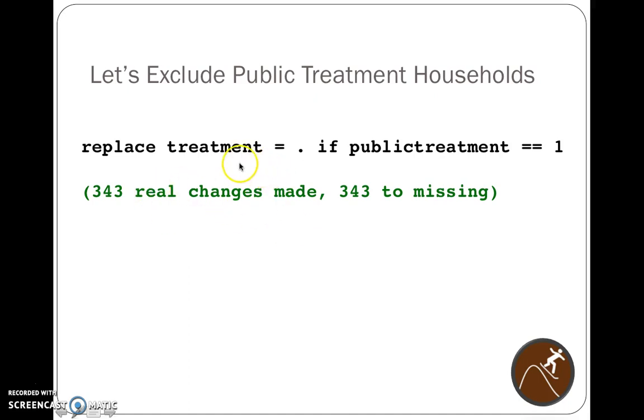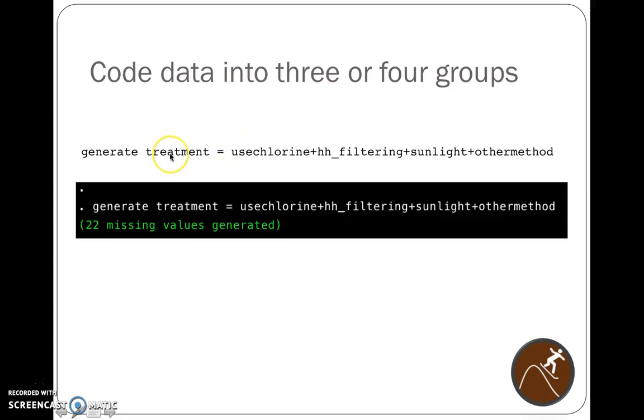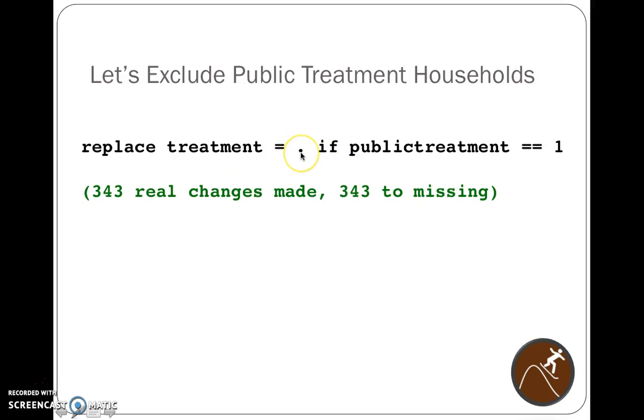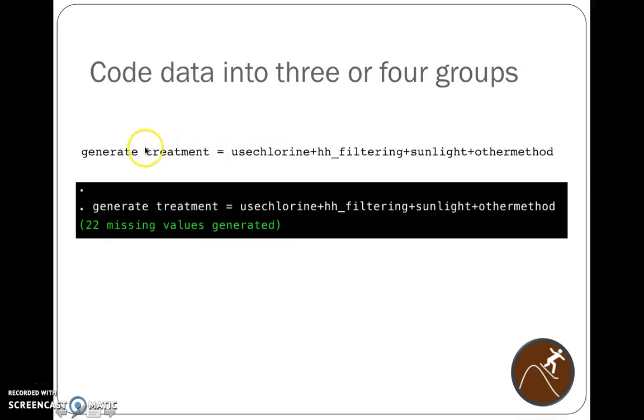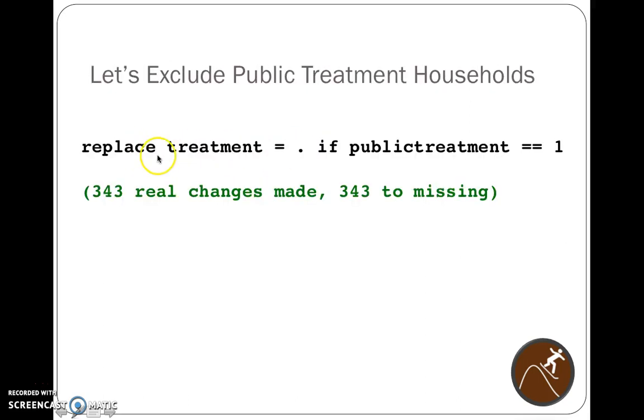Now, we also had people who had publicly treated water, and we weren't really interested in what treatment methods people with publicly treated water did. We assumed that their water was already better. So we said that if they have publicly treated water, we want them to not count in this new variable called treatment. So we set them as a dot for missing data in this variable treatment.